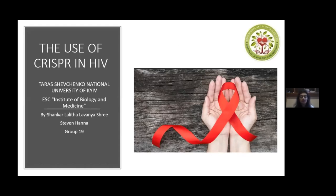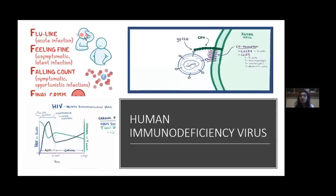HIV is Human Immunodeficiency Virus, which affects the immune system of the body and causes immunodeficiency. The complications which are caused by the HIV virus are called AIDS, which is Acquired Immunodeficiency Syndrome. Now let's see how it enters into our body and what it does.